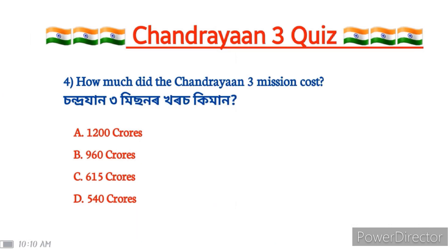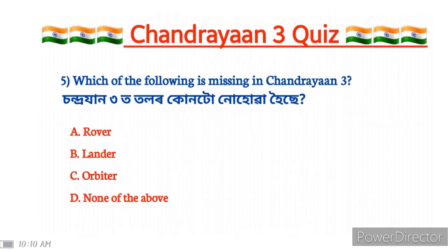How much did the Chandrayaan-3 mission cost? The answer is 615 crores.